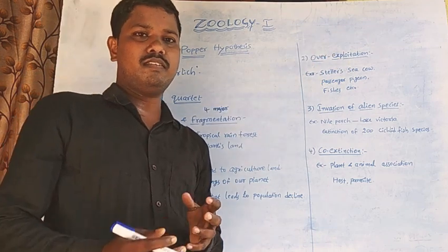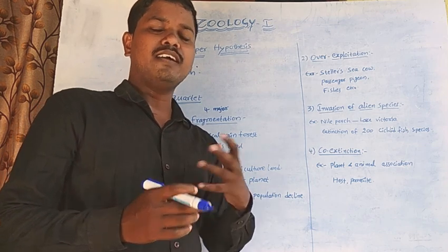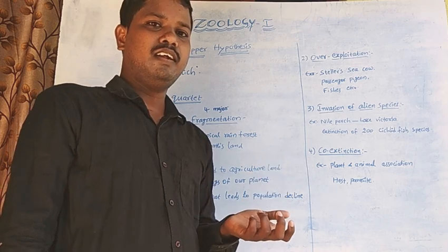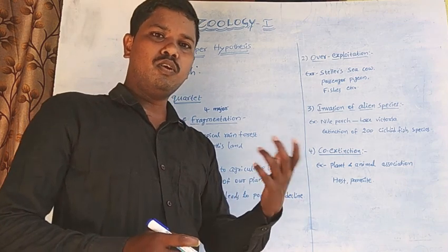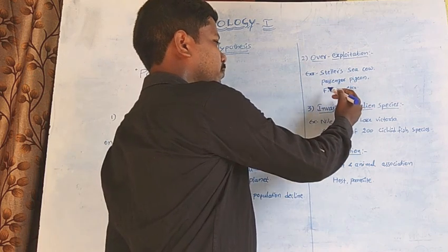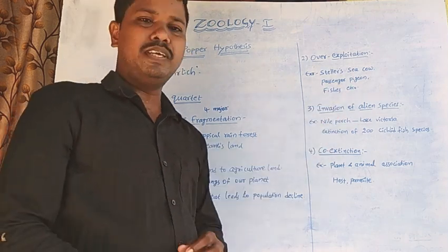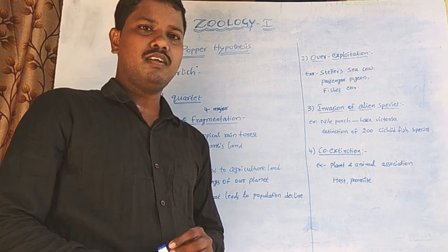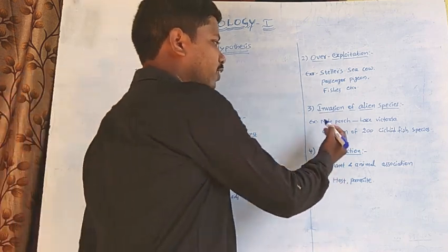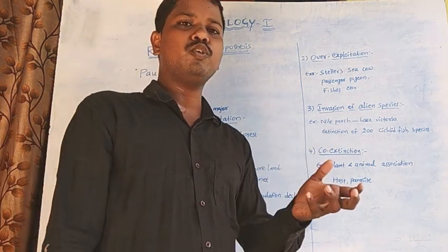The next cause is over-exploitation. When we consume species beyond what is necessary, it leads to over-exploitation. For example, Steller's sea cow, the passenger pigeon, and marine fishes are species that have been driven to extinction by humans for economic purposes.